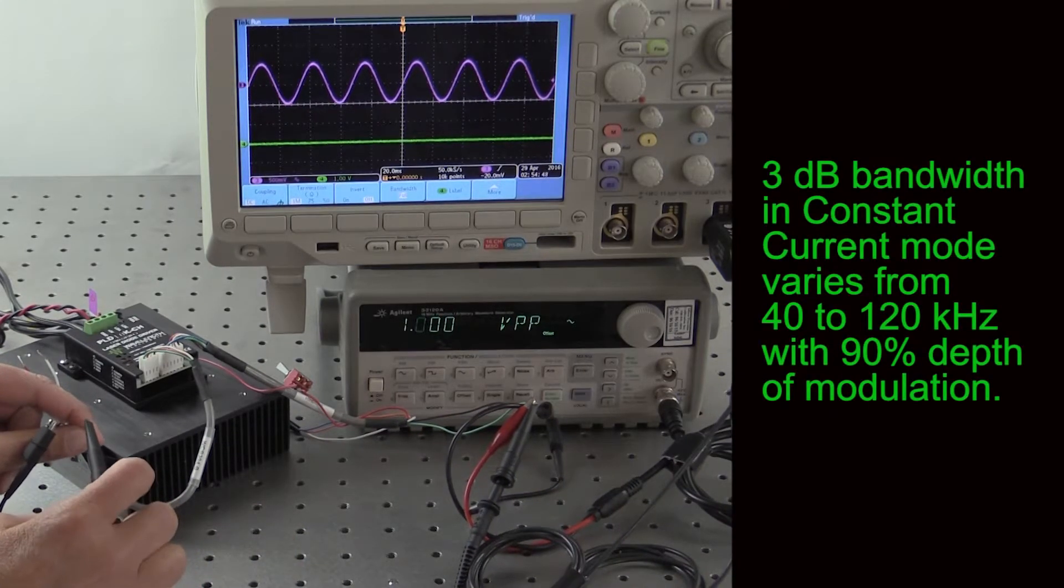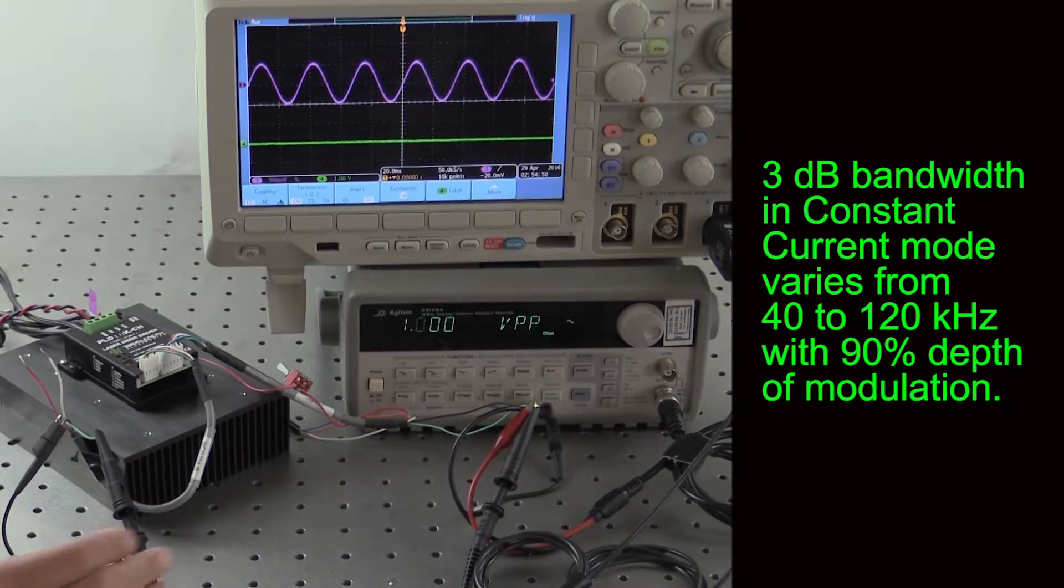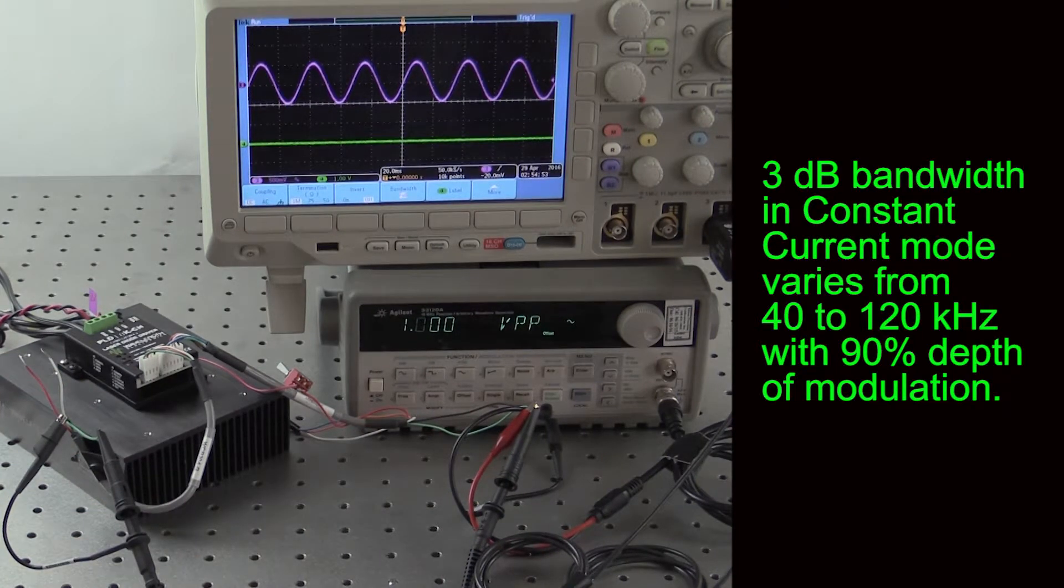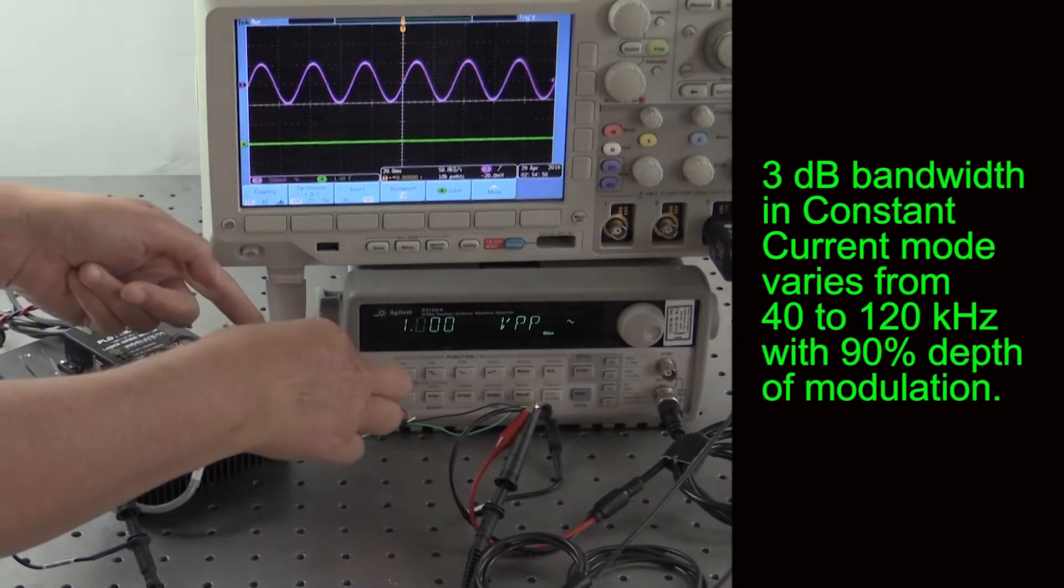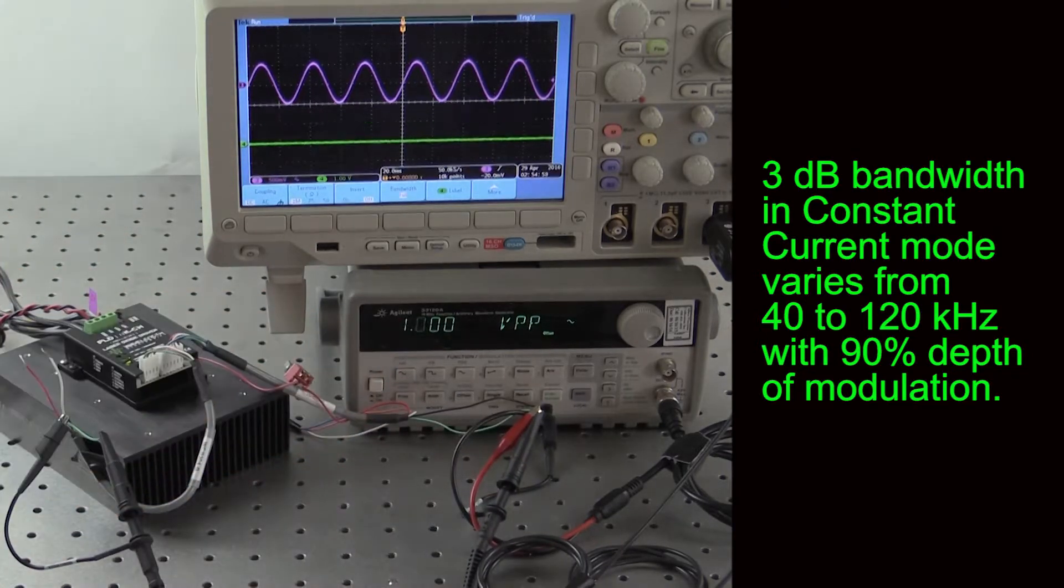The 3 dB bandwidth of the PLD drivers in constant current mode varies from 40 to 120 kilohertz. At these frequencies, the depth of modulation has reduced to 90 percent.